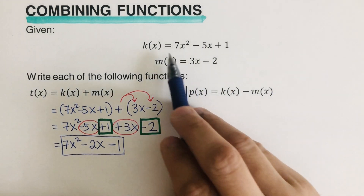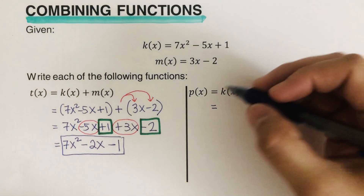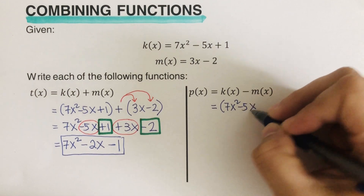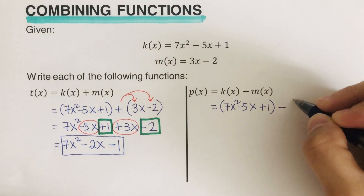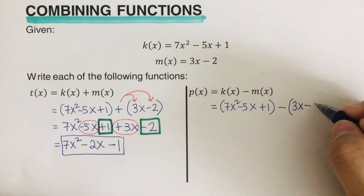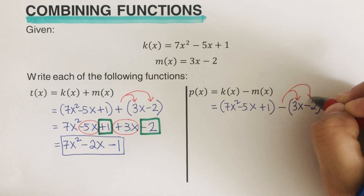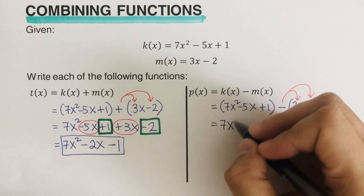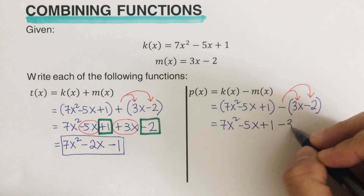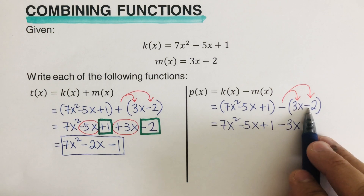We have p of x is equal to k of x minus m of x. We do the same setup: k of x is 7x squared minus 5x plus 1, minus m of x which is 3x minus 2. From here we distribute the negative to each term inside the parentheses.